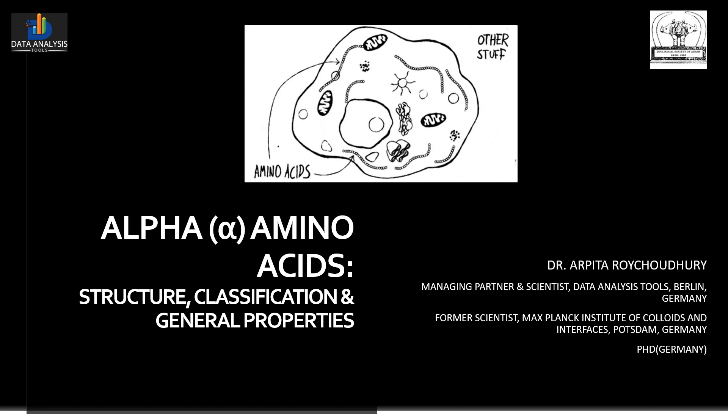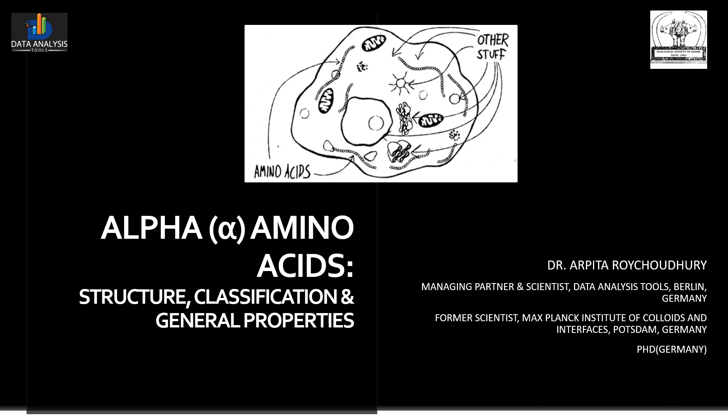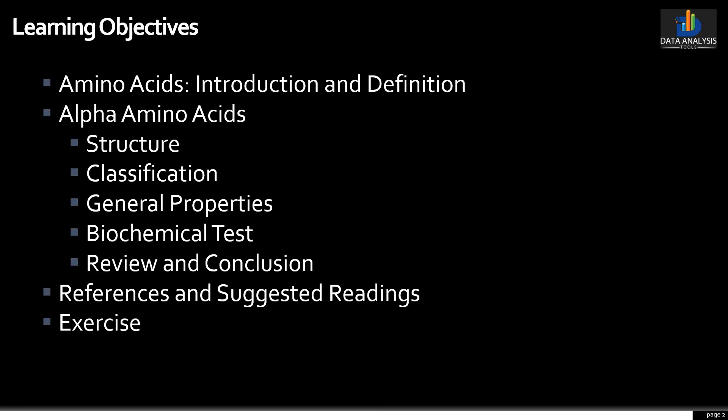Today I would be discussing about a very interesting and important component of living organisms: amino acids. During this presentation, we will go through a short introduction followed by the definition of amino acids. We will know what are alpha amino acids and why they are called so, their structure, classification, and general properties. We will briefly get acquainted with common biochemical tests done to check the presence of amino acids in a compound or mixture. Maybe when the pandemic subsides and you start your regular classes, this might just help you recall the basic principles during your practical classes.